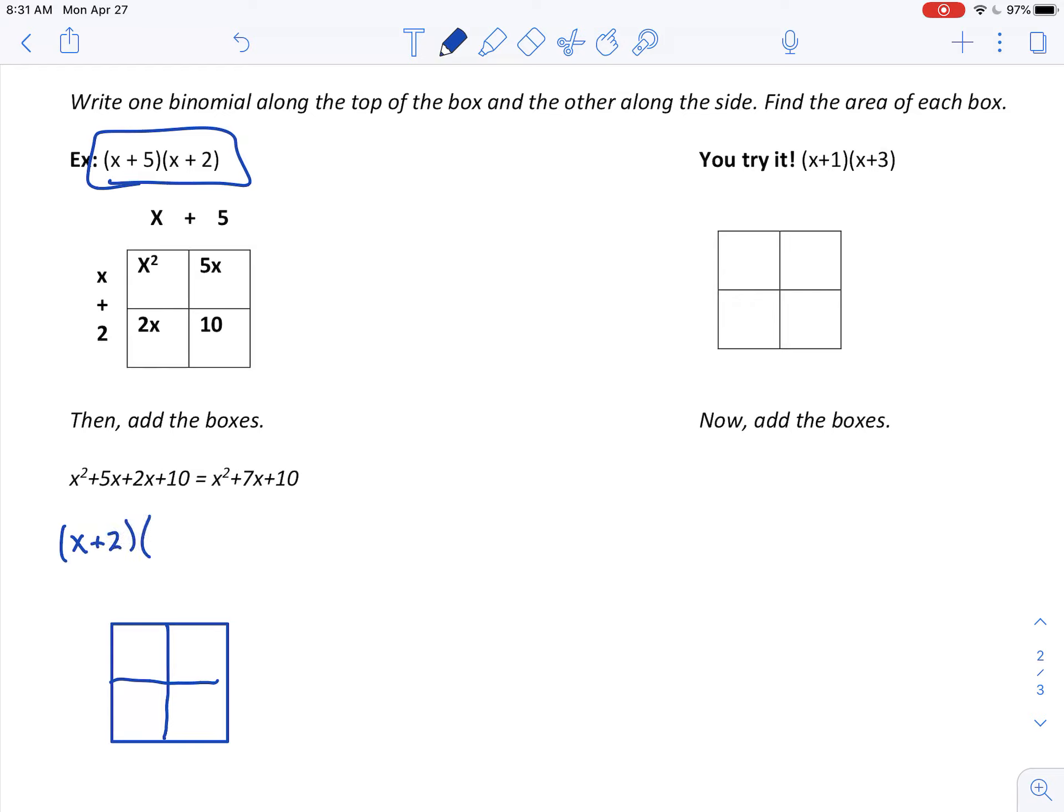So what we're doing here is we're going to take our binomials and we're going to make a box. So I'll give another example here. Let's say x minus, nope, that's not a good idea, x plus 2, x plus 4.